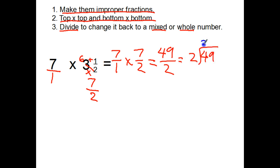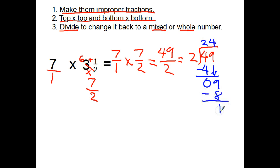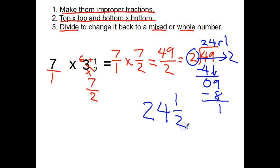There are two twos in forty-nine. Two times two is four, subtract, bring down my nine. How many twos in nine? Four. Four times two is eight. When I subtract there's one left over — twenty-four remainder one. Remember, this two comes over as the denominator, so my answer is twenty-four and one half. Seven times three and a half equals twenty-four and a half.